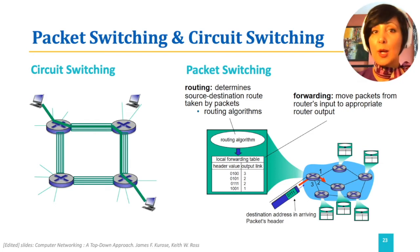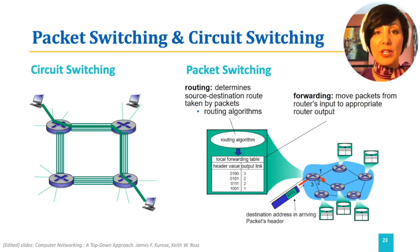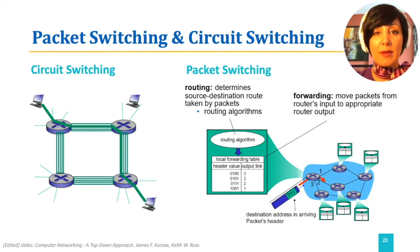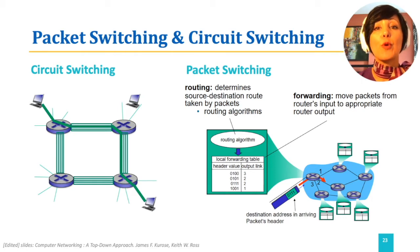In packet switching, we do not reserve resources. We use store and forward. At each link, we send a packet at full link capacity when the link is available. The end-to-end path from source to destination is calculated using routing algorithms. The outgoing link decision for the packet on each switch, which is called forwarding, is based on a forwarding table that is populated during running routing algorithms.